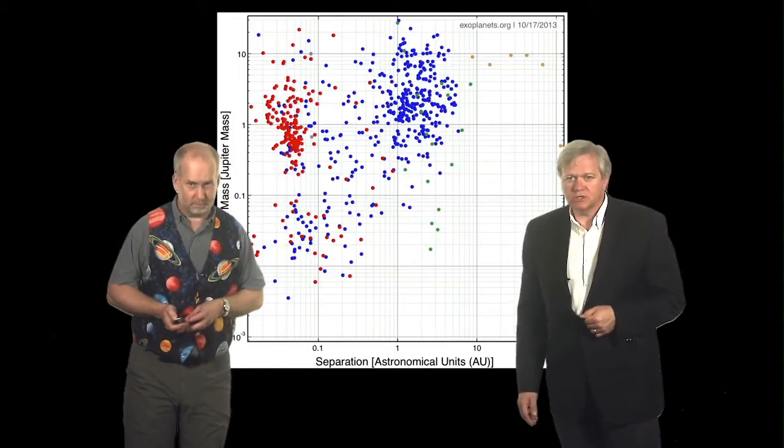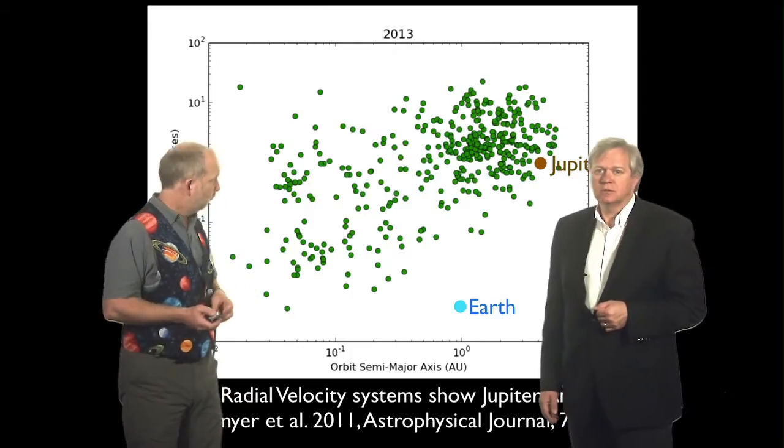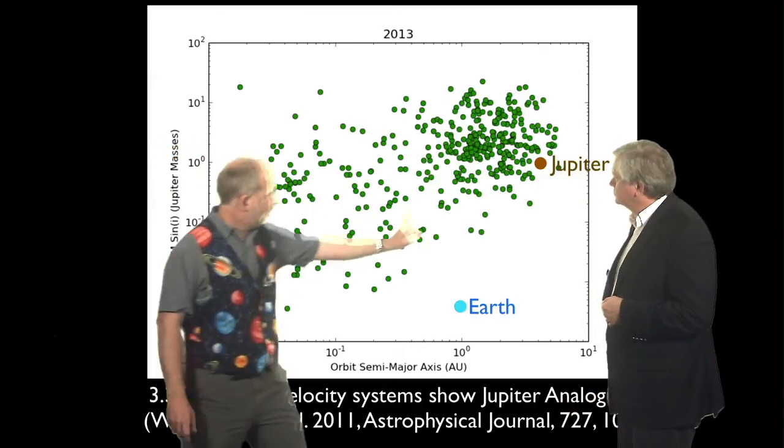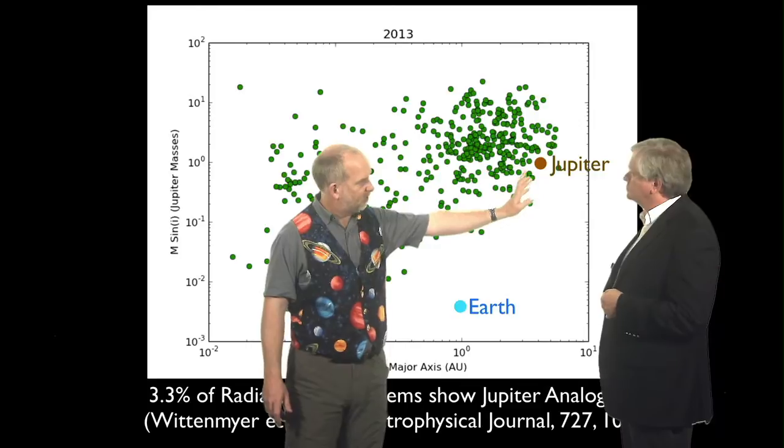Okay, so we can make some preliminary conclusions. We should compare it with the radial velocities. Remember this is just a radial velocity plot now. And they are now getting to the stage where they can see Jupiter-mass things at Jupiter-like orbits.